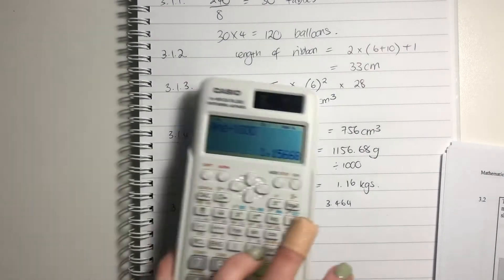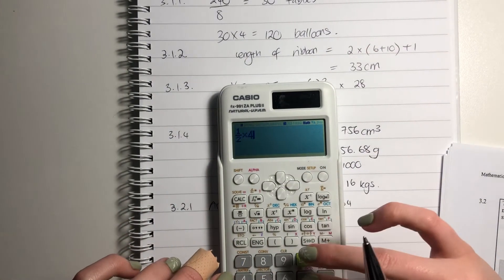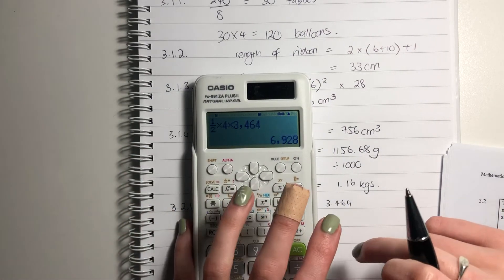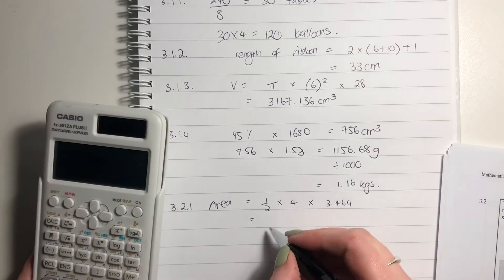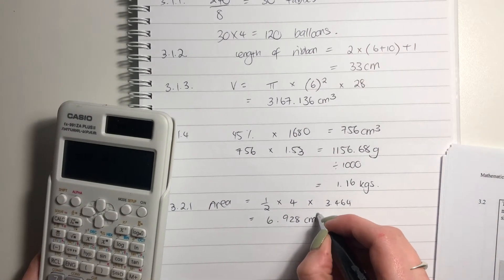Put that into our calculator. 3.464. Just make sure you type it in correctly. That's my rookie error that I always seem to do, okay, and that would be 6.928 centimeters squared.